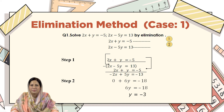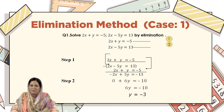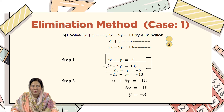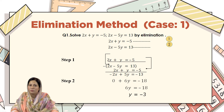Step 1: we will subtract equation 2 from equation 1. After subtracting, we get minus 2x plus 5y equals minus 13, and after combining it with 2x plus y equals minus 5, we get 6y equals minus 18, and after solving the equation we get the value y equals minus 3.